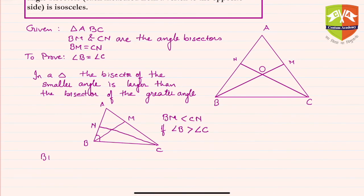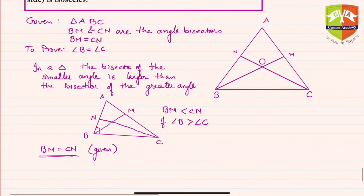But here we have been given that BM is equal to CN. This is given. That means we can't really say which angle is greater. What I'm trying to say is, if angle B is greater than angle C...